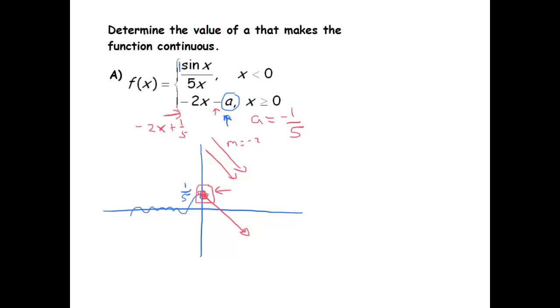Now, all of this is dependent on my prior knowledge of these graphs. Of course, a graph of a line you should be able to handle, but coming up with the graph of sin(x) over 5x just off the top of your head - the more experience you have, the easier that becomes. The other thing you could just notice is that we need -2x minus a to equal the limit as x goes to zero from the left of sin(x) over 5x.